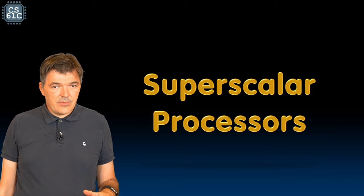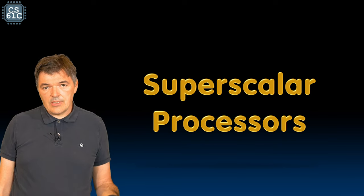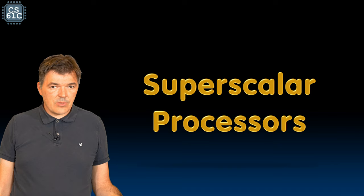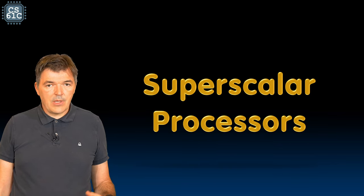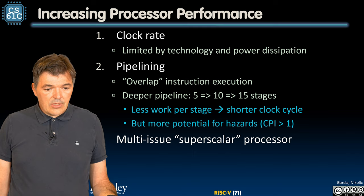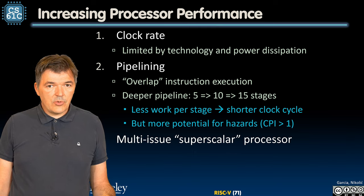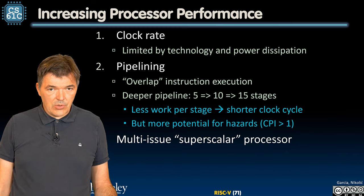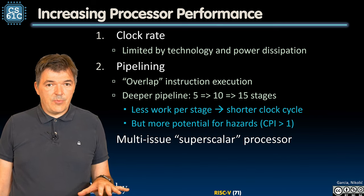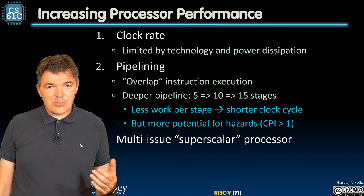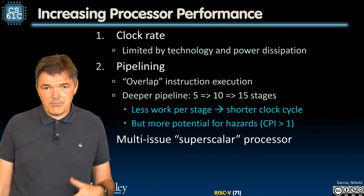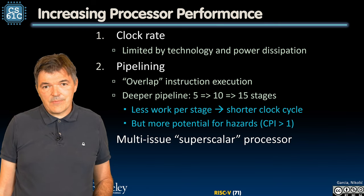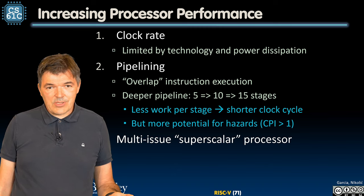There is one more advanced concept out there — the concept of so-called superscalar processors. You might have heard about that. Many of the modern very high performance processors are of superscalar type. Before we get to those, let's see how we can increase processor performance further from what we know so far. We have designed a five-stage pipeline, and this five-stage pipeline is the industry workhorse nowadays. Probably 80 or 90 percent of processors out there are five-stage pipelines, but they don't have the highest possible performance.